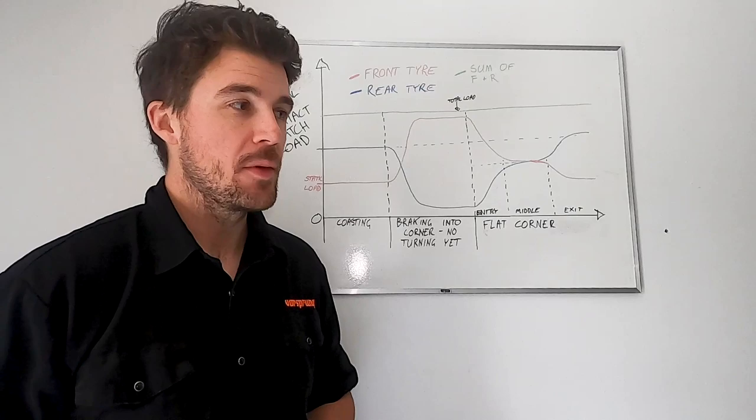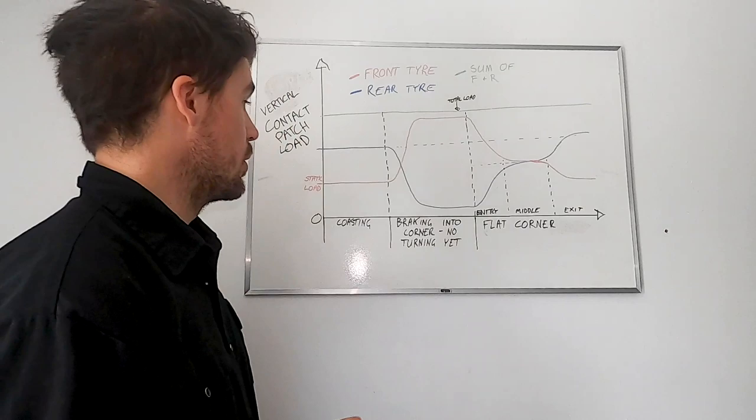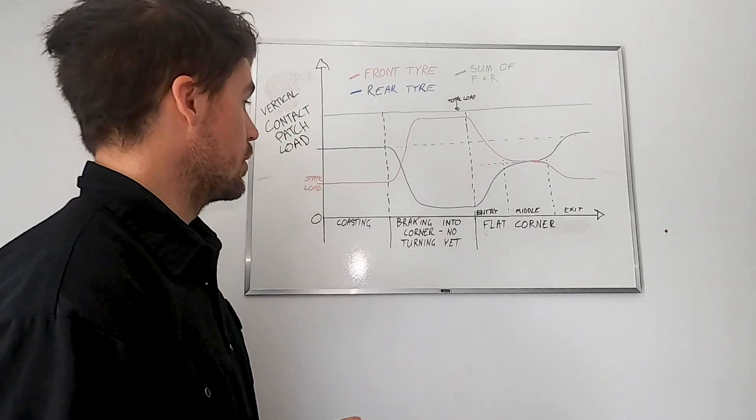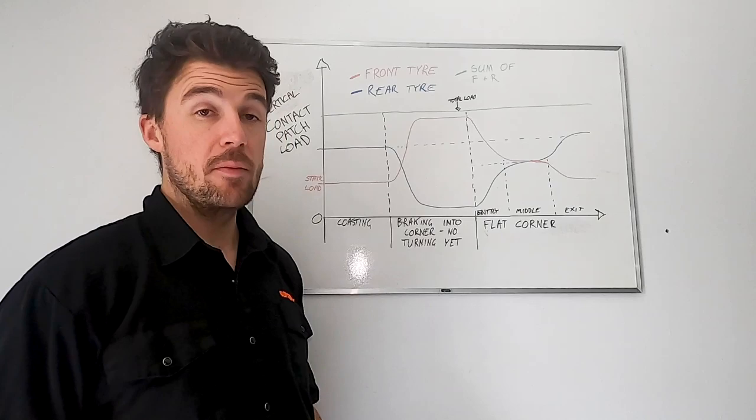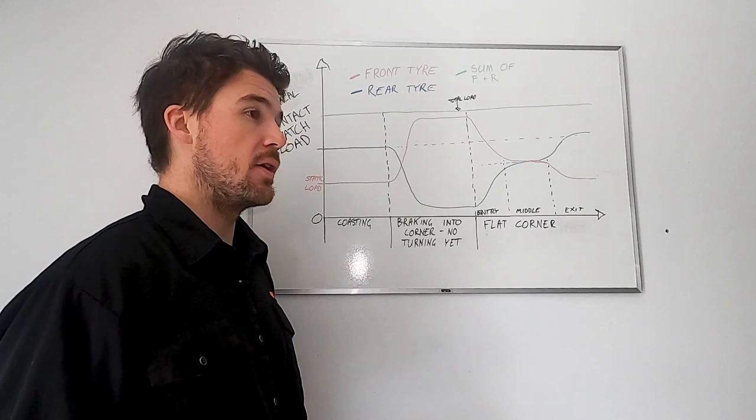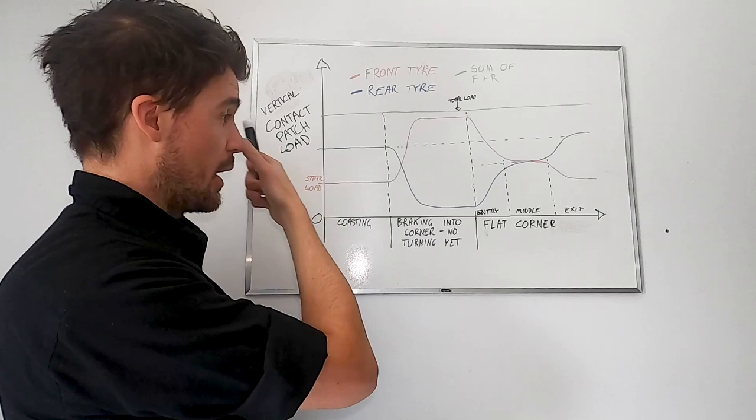All right, so we're back at the vaunted whiteboard to discuss something approximating steady-state grip. To understand the background of this, we need to understand that on what we can consider flat, smooth ground, when I say flat, I mean smooth, ready and not changing. If we're coasting, we're not braking, then we have a fixed weight distribution. And so this graph shows a vertical contact patch load on each tire. So the red is the front tire, so that starts off lower than the rear tire. And the reason for that, obviously, is that bikes have a real weight bias.